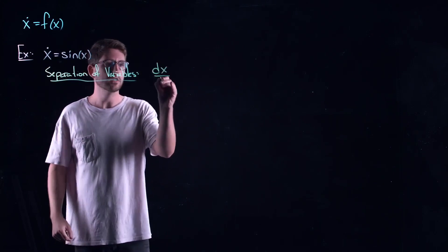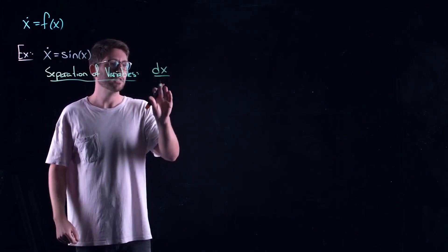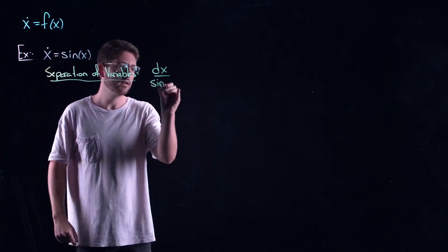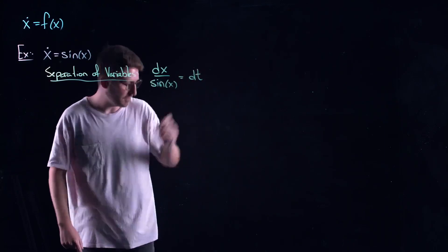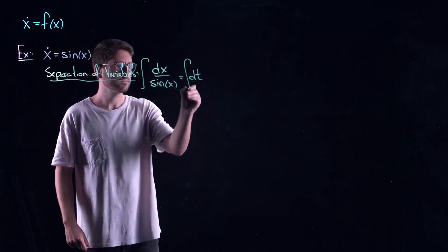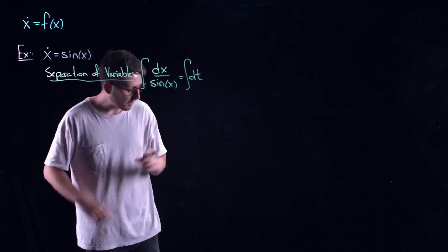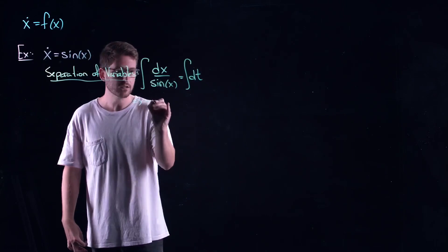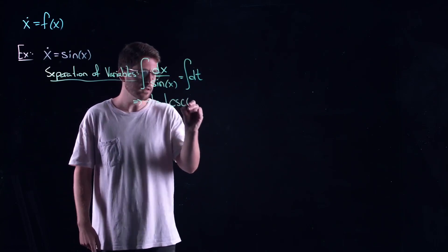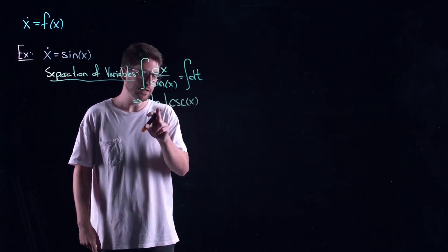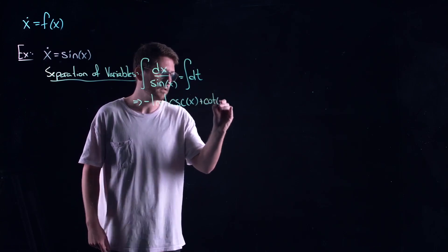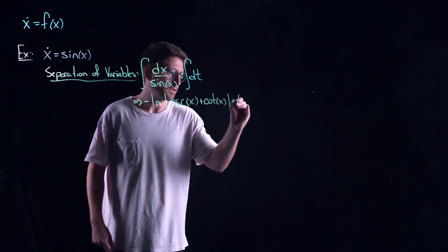We can use separation of variables to solve this. It comes down to treating dx/dt as a fraction, separating out the x and t components to each side, and integrating. If you go through the steps, you get the natural logarithm of the absolute value of cosecant of x plus cotangent of x, equal to t plus c.